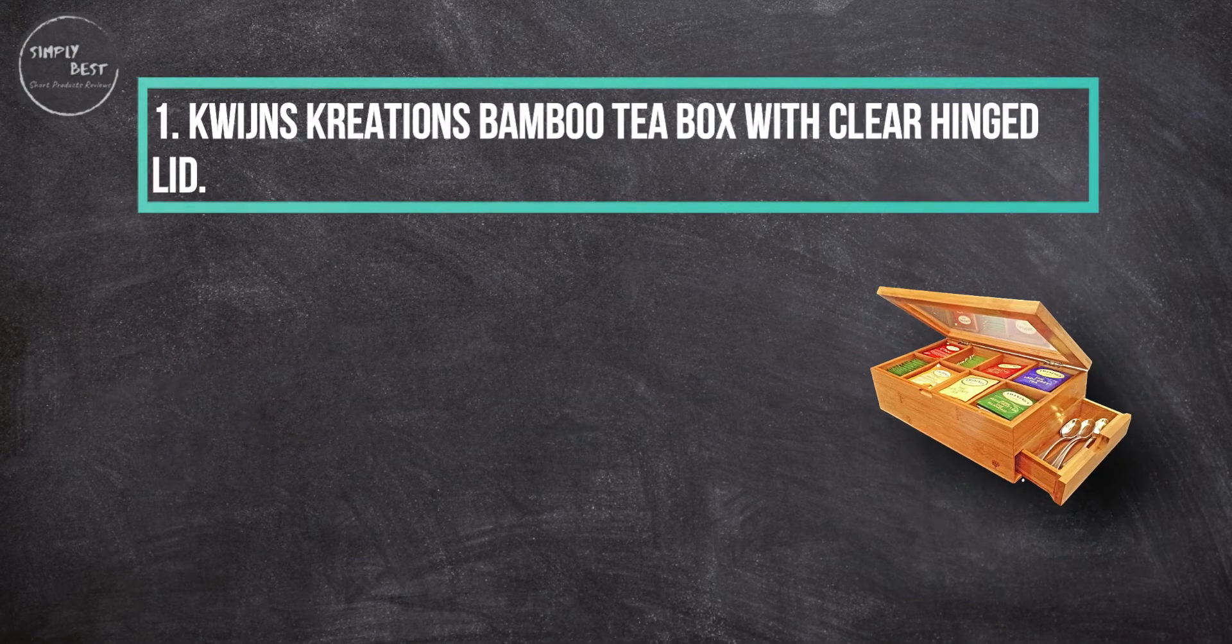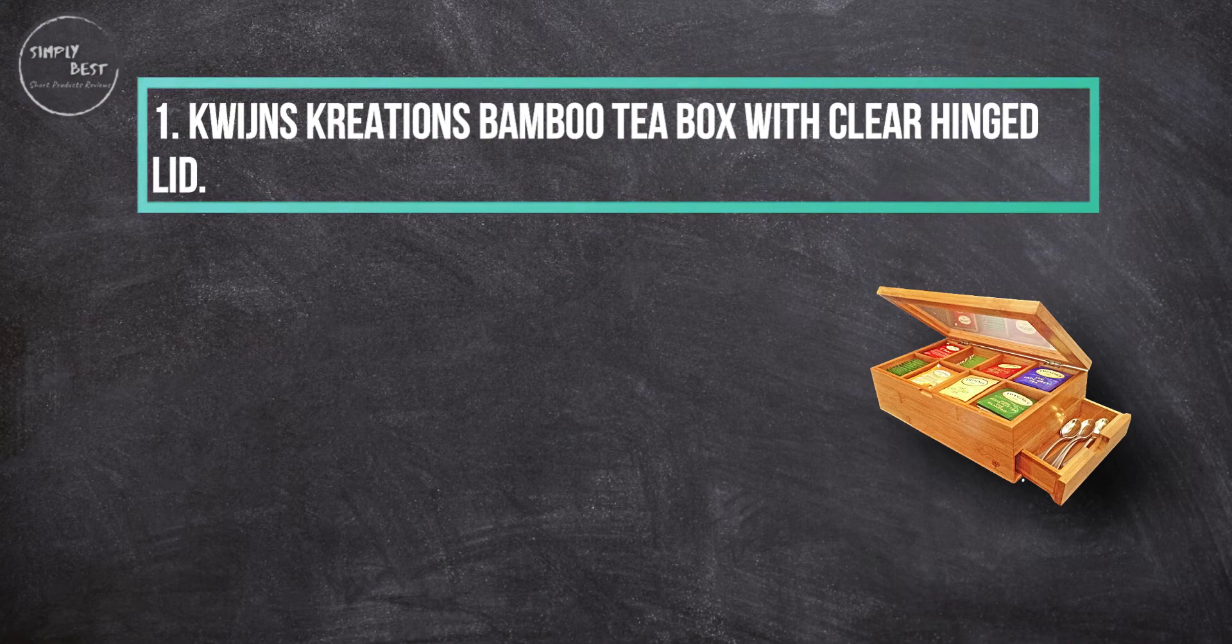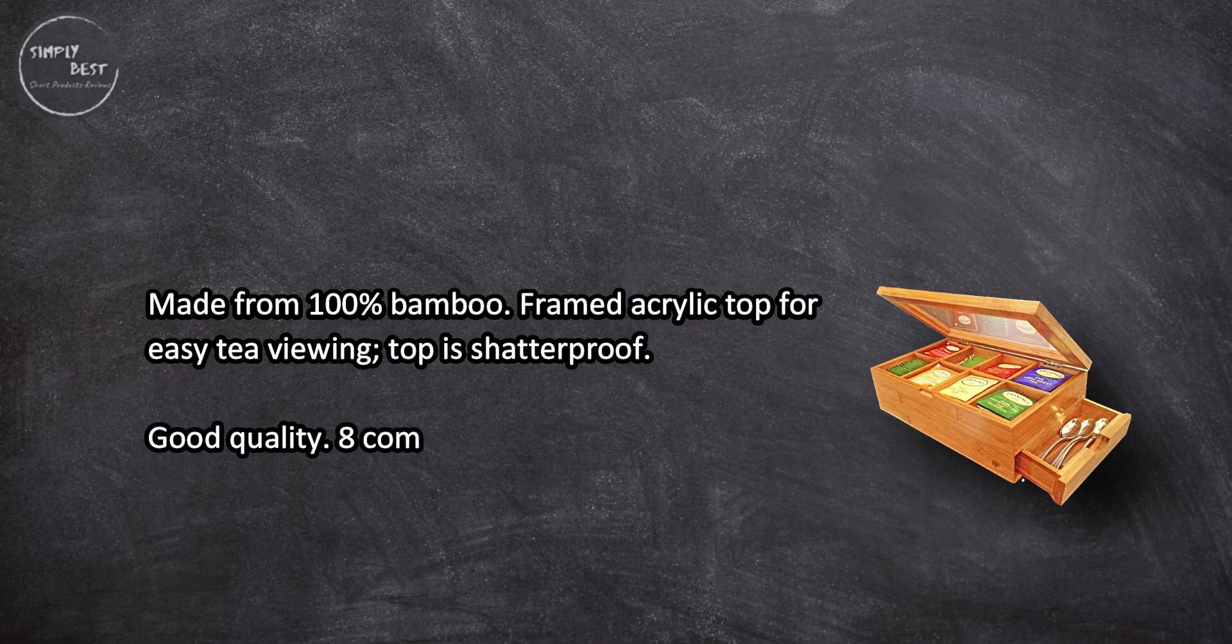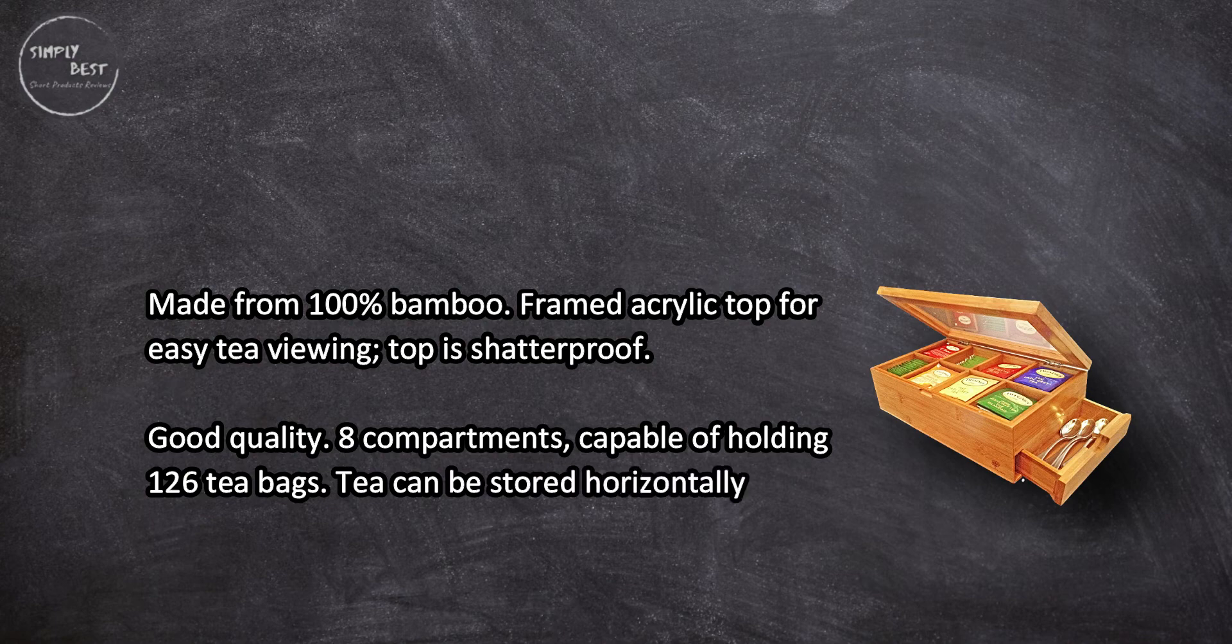At number one, Kwijns Creations Bamboo Tea Box with clear hinged lid, made from 100% bamboo. Features a framed acrylic top for easy tea viewing that is shatterproof and good quality. Eight compartments capable of holding 126 tea bags. Tea can be stored horizontally or vertically.